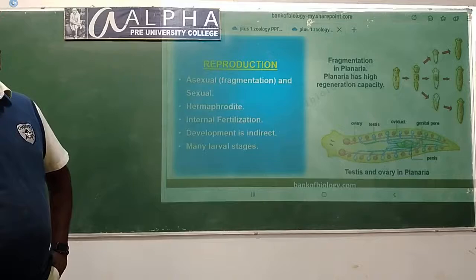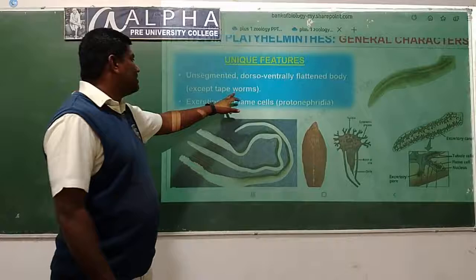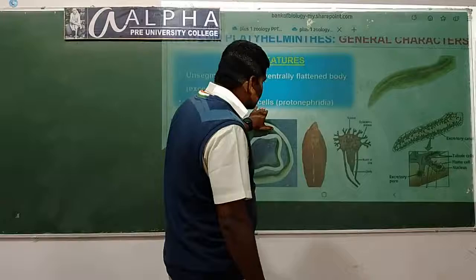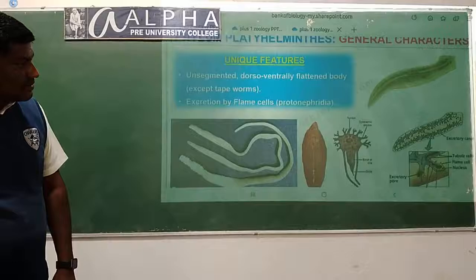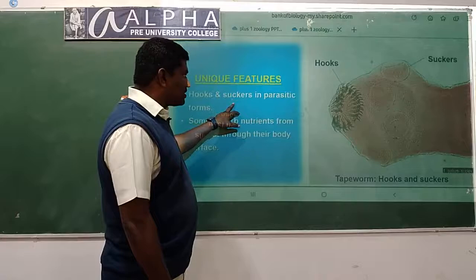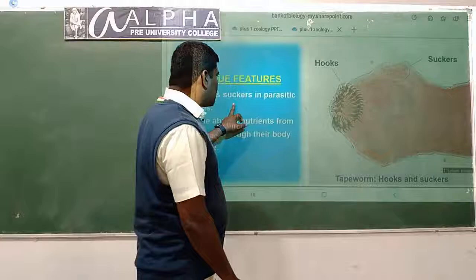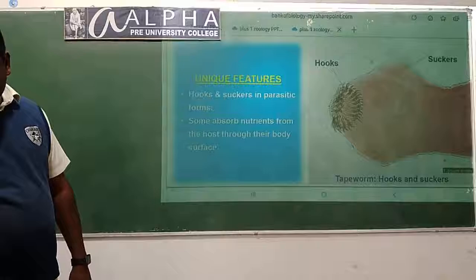Many larval stages are seen. Unique features: unsegmented, dorsoventrally flattened body - example the tapeworm. Excretion by flame cells, also called protonephridia - specialized cells for removal of waste materials. In case of the tapeworm, in the head we see hooks and suckers. Some absorb nutrients from the host through their body surface.